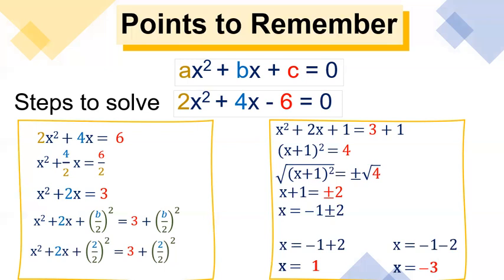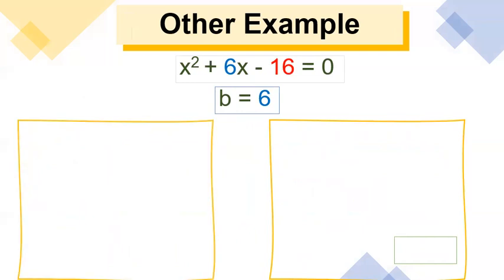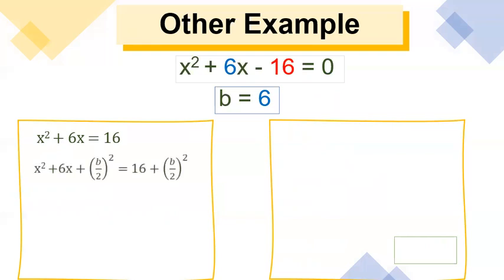I will give you more examples so that we understand this better. Our equation is x squared plus 6x minus 16 is equal to 0, where b here is 6. First step, we need to transpose negative 16 to the other side and it becomes positive 16. Then let's complete the square by adding (b/2) squared to both sides. Substituting the value of b, which is 6, that's x squared plus 6x plus (6/2) squared is equal to 16 plus (6/2) squared.